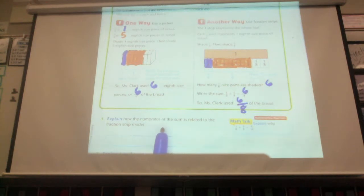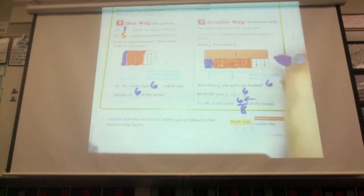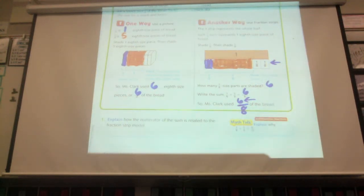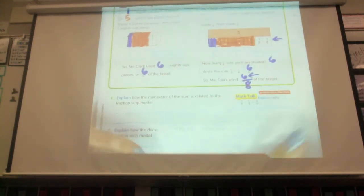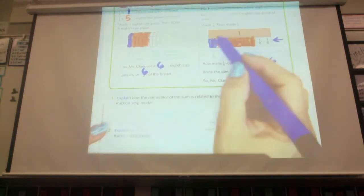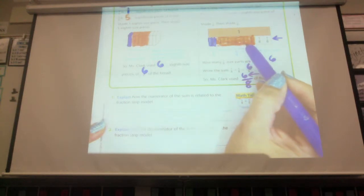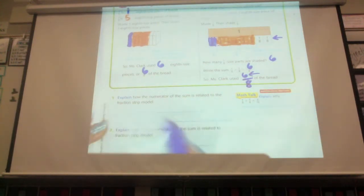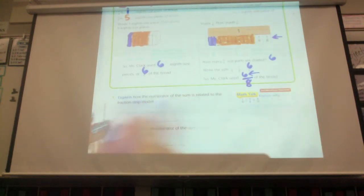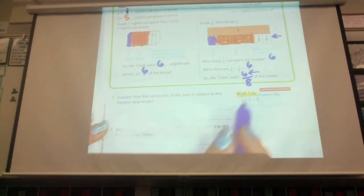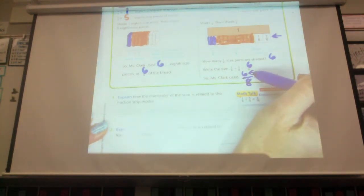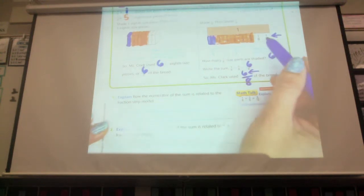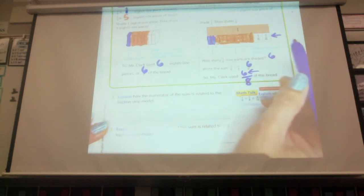Explain how the numerator of the sum, that's this right here, the numerator of the sum is related to the fraction strip model. That's this right here. How are they related? Go ahead and write it in your own words. How are those two related? How many of you are making that harder than it needed to be? Okay, remember, sometimes it's as simple as it sounds. We shaded how many pieces up here? Six. And what's this number? Six. Are those numbers related? Yes, they are. It's that simple. So don't make it harder than it needs to be. I like how Tony restated the question when he answered it. So in this case, the numerator and the sum is related to the fraction strip because it's the same number of pieces that were shaded.